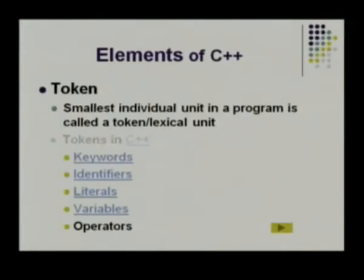For example, if you take the English language, A, B, C, D are the simplest forms — you cannot simplify them further; they are the basic elements of that language. Similarly, when we say tokens in a programming language, it means the smallest unit of that language, also called a lexical unit. There are 5 tokens available in C++.